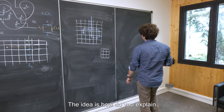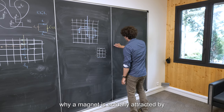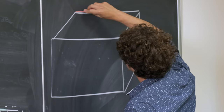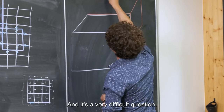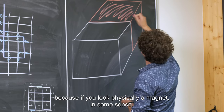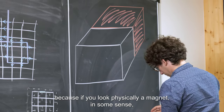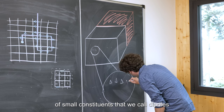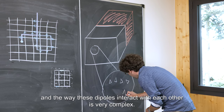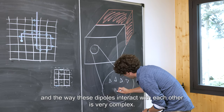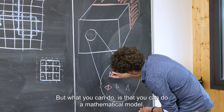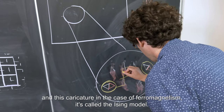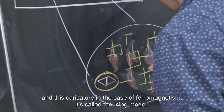The idea is: how do you explain why a magnet is actually attracted by a surface or a magnetic field, or why it's not? It's a very difficult question because physically, a magnet is in some sense made of a huge number of small constituents that we call dipoles. The way these dipoles interact with each other is very complex. But what you can do is make a mathematical model — a caricature of what is happening. This caricature, in the case of ferromagnetism, is called the Ising model.